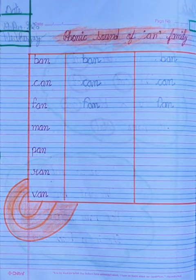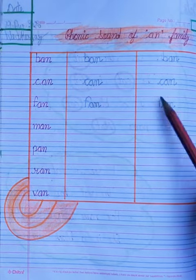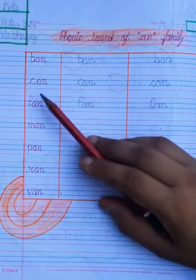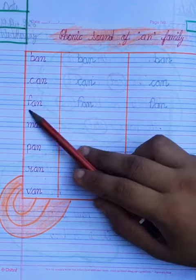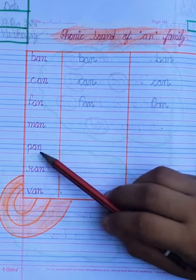So speak this word and write down also. B-A-N, ban. C-A-N, can. F-A-N, fan. M-A-N, man. P-A-N, pan.